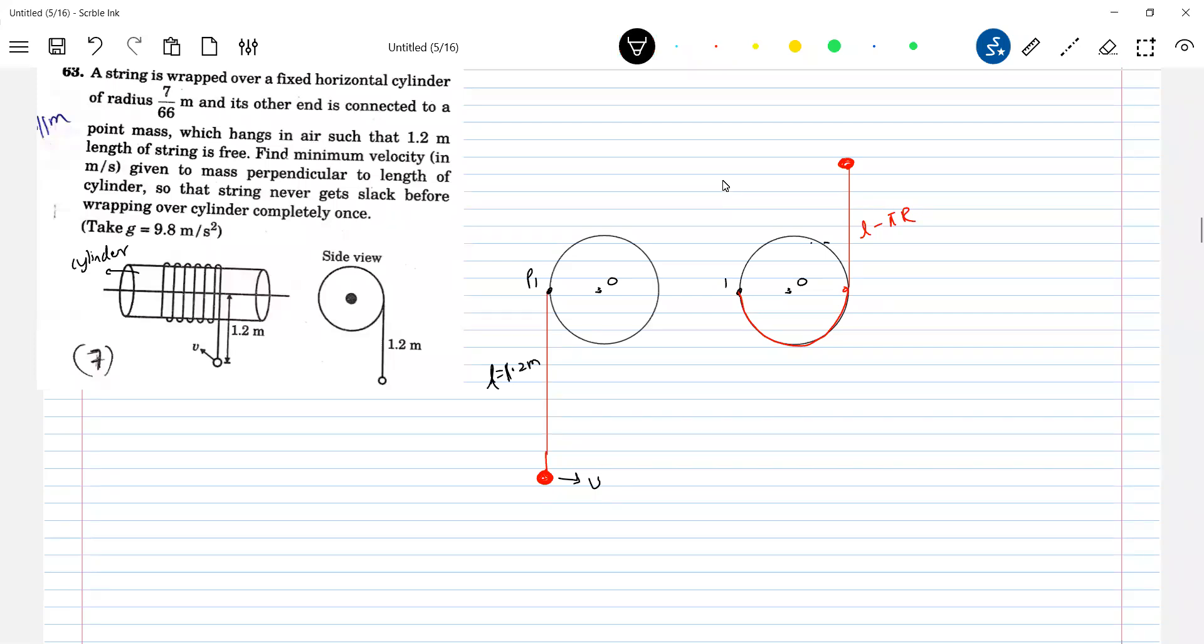So here it will have some velocity. What minimum velocity is telling? So what is the possible thing here? The tension here can be 0 also. Then it will provide required centripetal force. Sir, if tension is 0, it will become slack. Mg, no Mg.